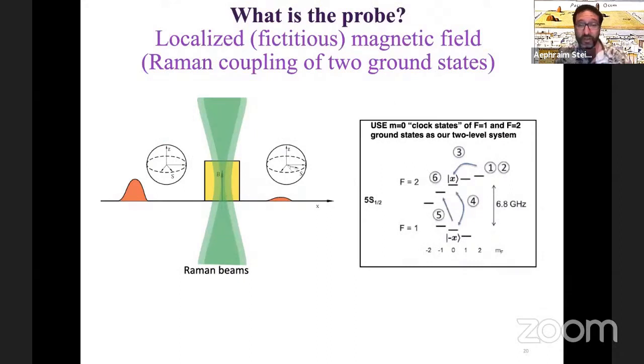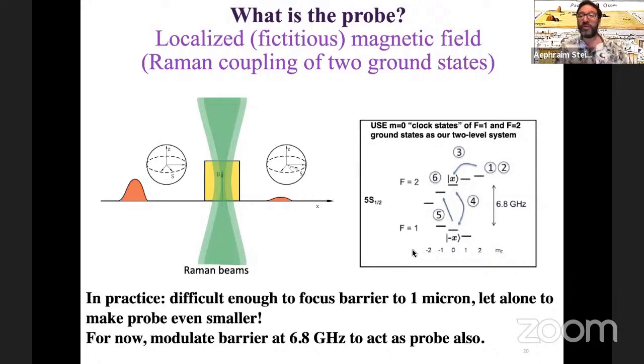Now, we also need this probe. We need this fictitious magnetic field. I say fictitious because I don't really know how to confine a real magnetic field to a one micron region. What we do know how to do is use laser beams to couple two different states of an atom through a Raman transition. And those two different states act like a spin one half, and the coupling acts like a magnetic field. So we can use either an additional set of laser beams superposed on the barrier to act as this effective magnetic field, or in our case, because it was difficult enough to focus one beam down, let alone focus three else more tightly, just use the barrier itself by modulating it at 6.8 gigahertz as an additional Raman beam.